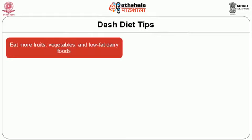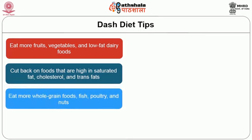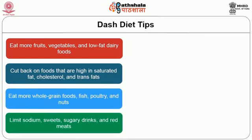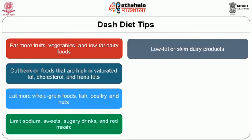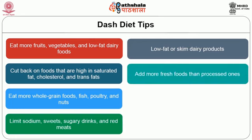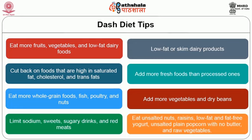The DASH tips are: eat more fruits, vegetables, and low-fat dairy foods; cut back on foods high in saturated fat, cholesterol, and trans fats; eat more whole grain foods, fish, and poultry; limit sodium, sweets, sugary drinks, and red meats; allow low-fat or skim dairy products; add more fresh foods than processed ones; add more vegetables and dry beans; instead of snacking on chips or sweets, eat unsalted nuts, raisins, low-fat yogurt, unsalted plain popcorn with no butter, and raw vegetables. Read food labels to choose products that are low in sodium.